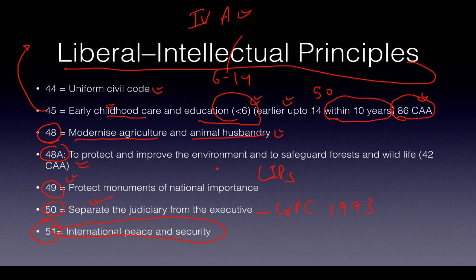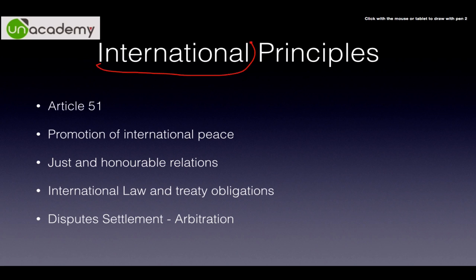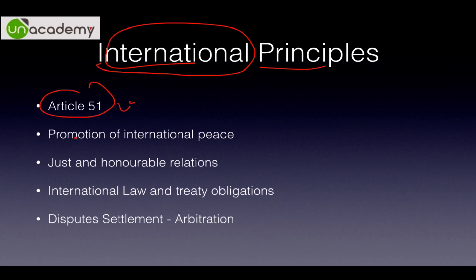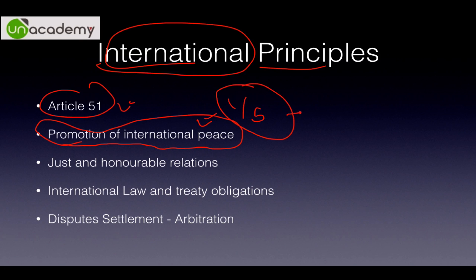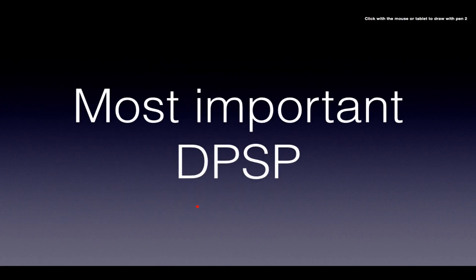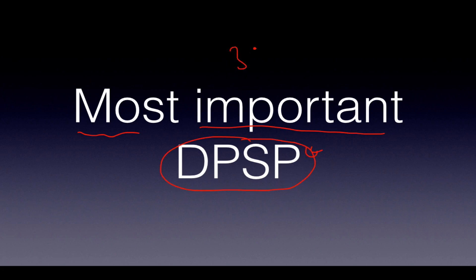Under Article 51, dealing with promotion of international peace, this is one of the five conditions where the Indian Parliament can legislate on the State List. When a matter deals with international peace or giving effect to an international treaty, Parliament can legislate on it. It covers honorable relations with states, international law and treaty obligations, and finally dispute settlement through arbitration. By this discussion, you might already know which is the most important directive principle — obviously the answer is Article 39(b) and (c), because it gives a whole lot of power to Parliament to amend the constitution and implement various schemes.